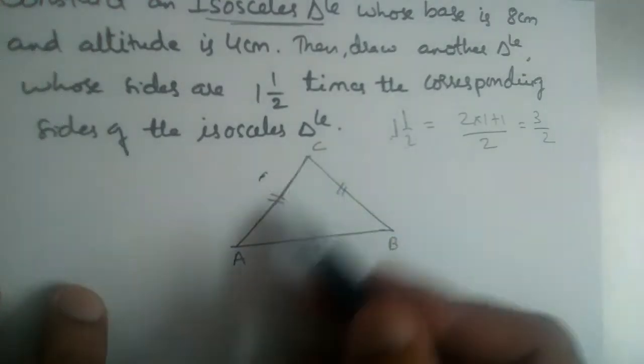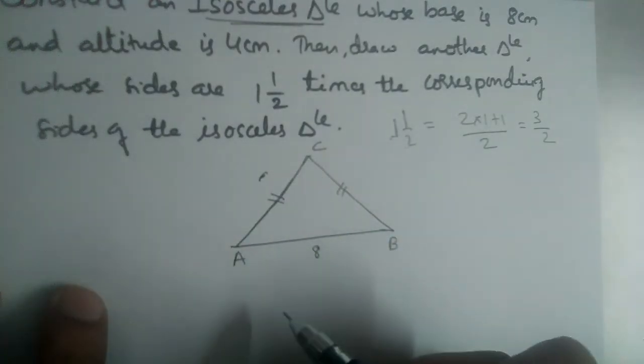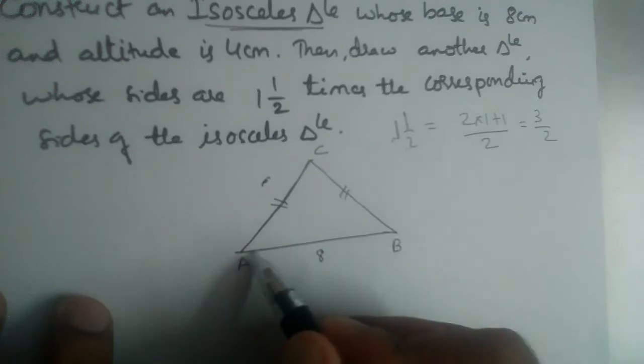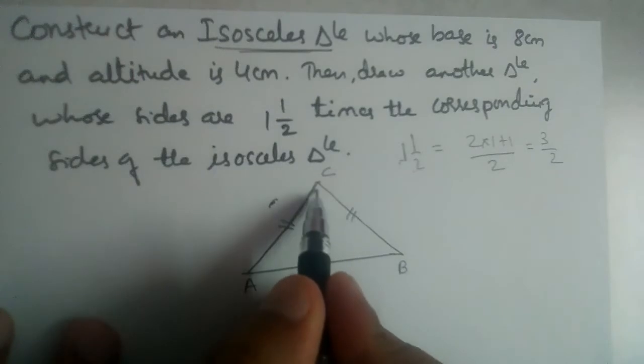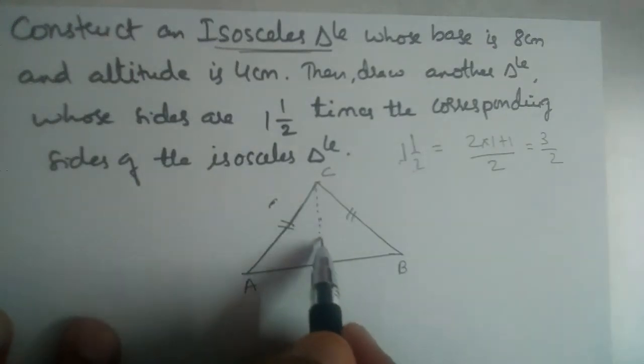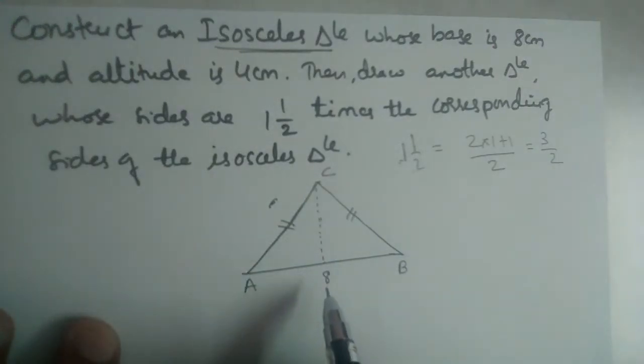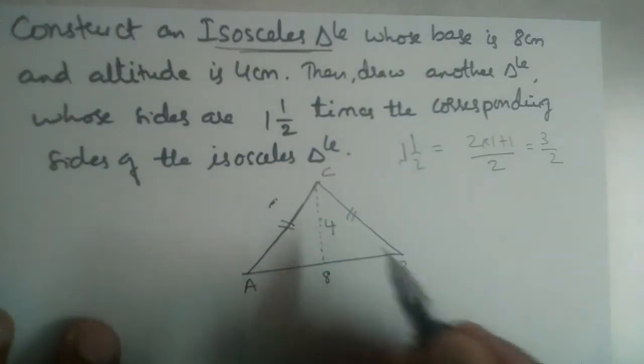So this AC and BC lengths are not mentioned. He gave us the base is 8 and altitude. Altitude means height of the triangle. So this is the altitude of the triangle. This should be equal to 4 cm.